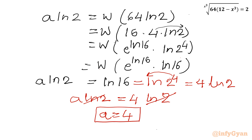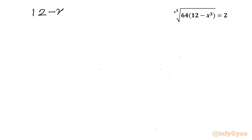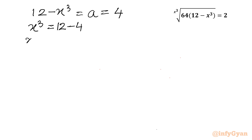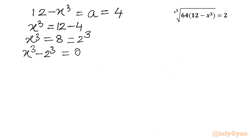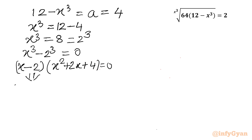Now remember our substitution was 12 minus x³ equal to a. Putting this value: 12 minus x³ equals 4, so x³ equals 12 minus 4, which is 8 — nothing but 2³. Writing x³ minus 2³ equals 0 and applying the a³ minus b³ formula: (x minus 2)(x² + 2x + 4) equals 0. From the first bracket, x equals 2, which is the real solution.